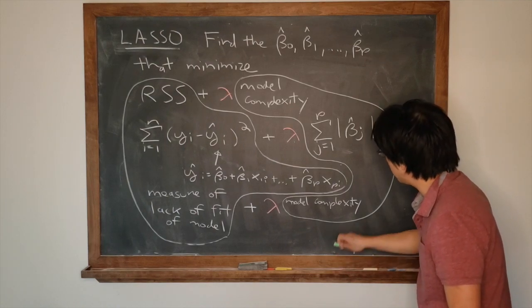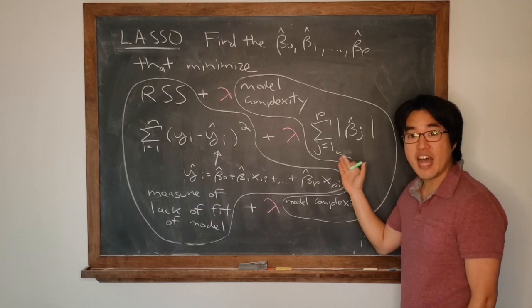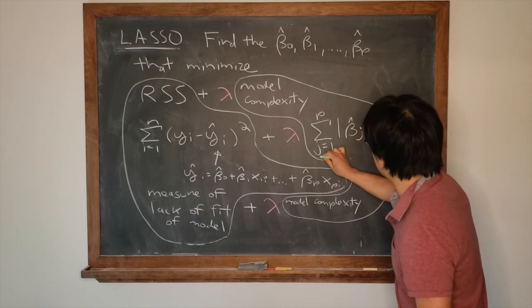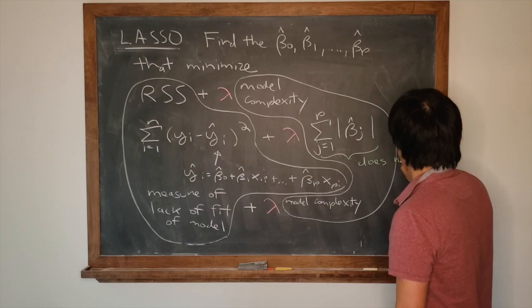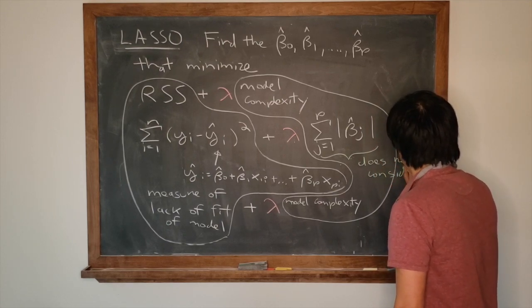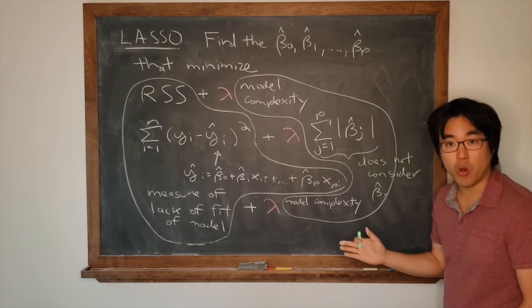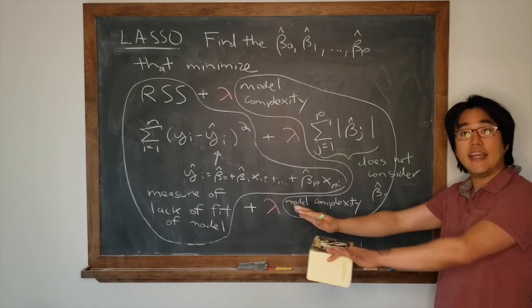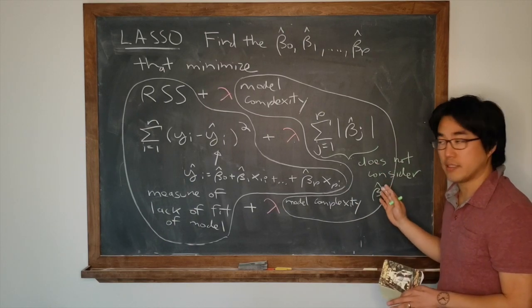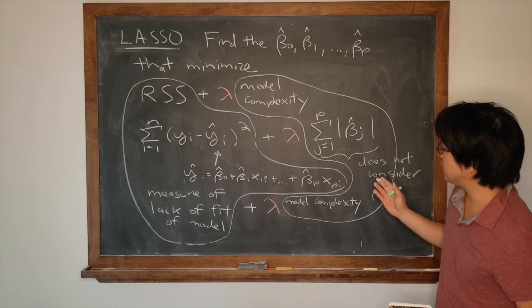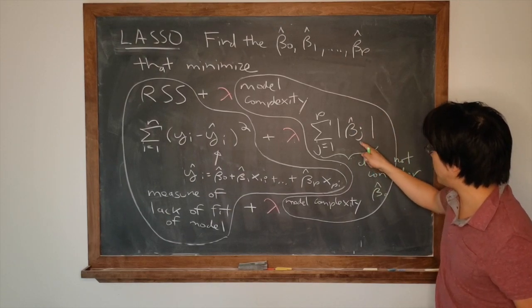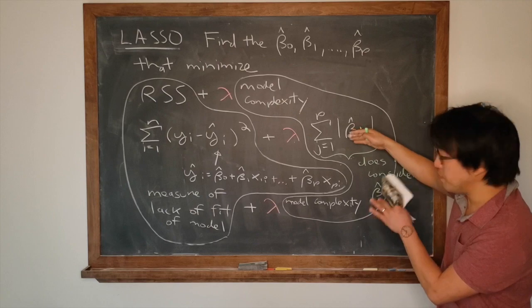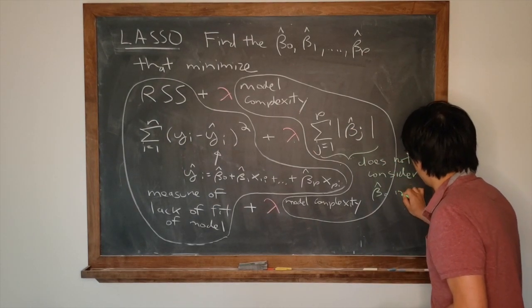The first does not consider beta hat zero in the model complexity, meaning the intercept is left out. The intercept can do whatever it wants, whereas the variables, the slopes, can be shrunk to zero. The model complexity does not consider beta zero intercept.